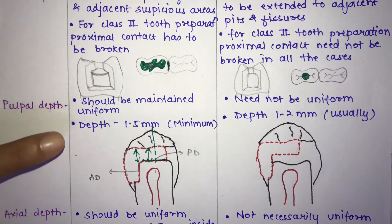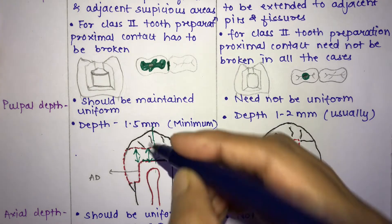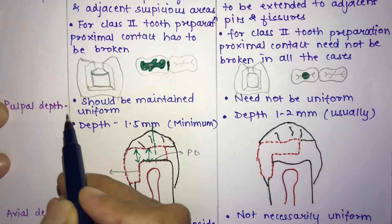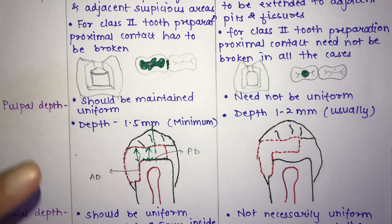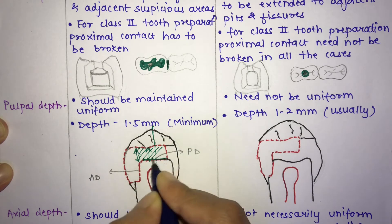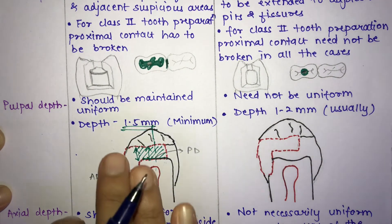The pulpal floor must be flat to resist forces directed along the long axis of the tooth and to provide a strong, stable seat for the restoration. The depth of 1.5 mm is required to result in adequate thickness of the amalgam restoration, providing resistance to fracture and wear.